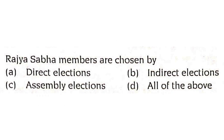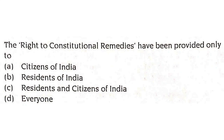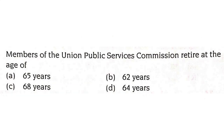Rajya Sabha members are chosen by direct elections, indirect elections, assembly elections, or all of the above? Rajya Sabha members are chosen by indirect elections, whereas Lok Sabha members are elected directly. The right to constitutional remedies is provided only to the citizens of India. Members of the Indian Public Service Commission retire at the age of 65 years and can hold office for a period of only 6 years.